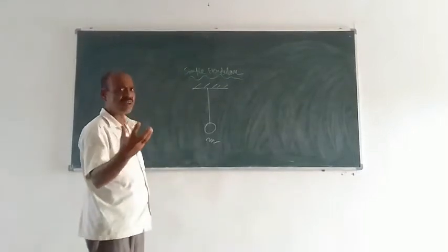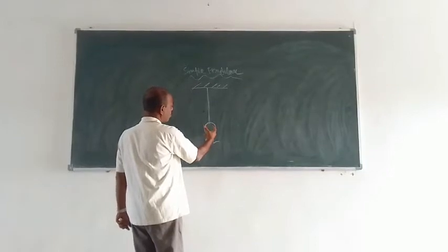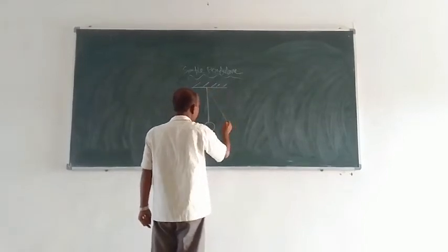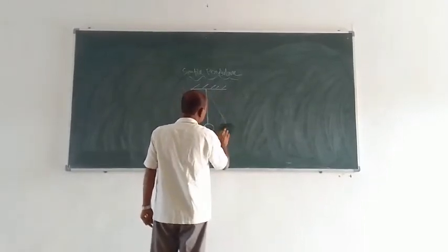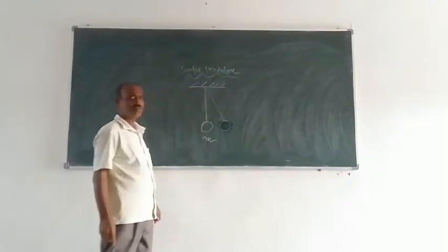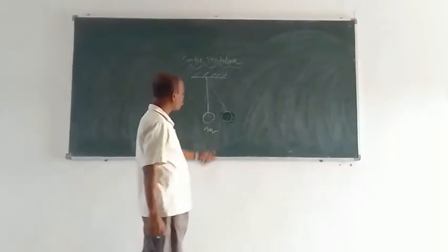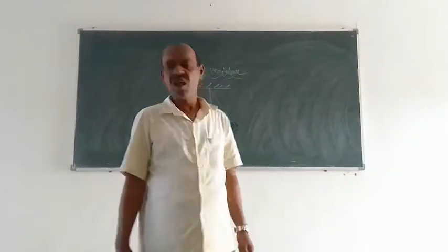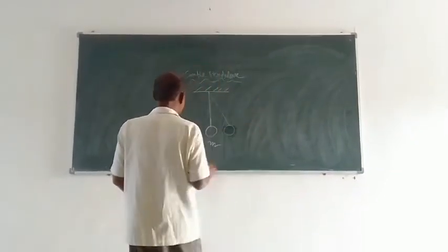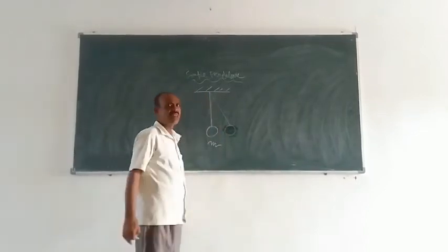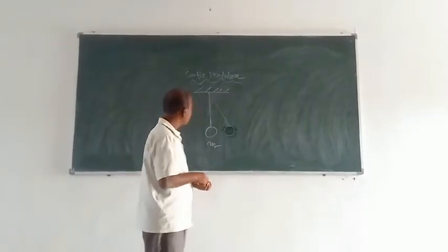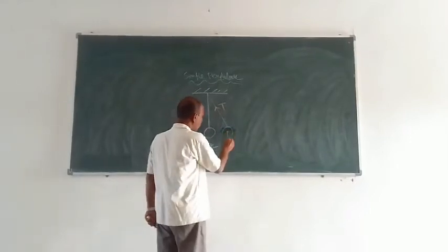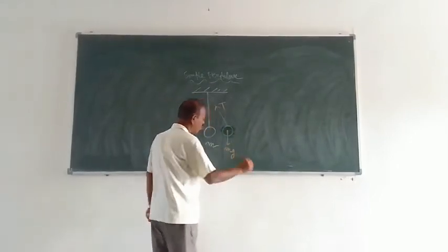Now, just by using your hand, you take this little bob and displace it. At this position, we know the bob is moving along the arc in the normal direction. There will be one tension acting along the thread, denoted by T. And here the weight of the bob is acting downward, equal to mg, where m is the mass and g is the acceleration due to gravity. So mg is the weight.